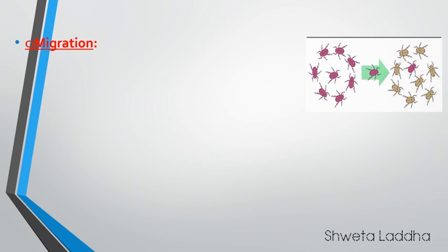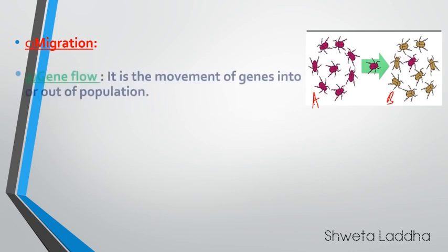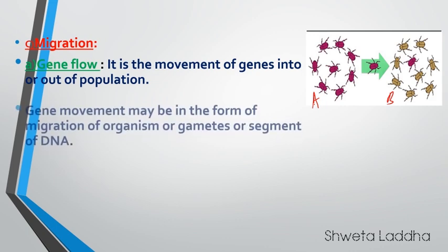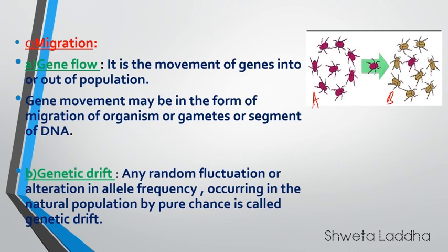The third factor is migration. You can see population A and population B — this beetle is going away from population A to population B. Thus, immigration and emigration both are going to affect the gene pool. This movement of genes from one population to another is called gene flow. Gene movement may be in the form of migration of an organism, or it may be a gamete or a segment of DNA. Sometimes birth and death also cause changes in the gene population.